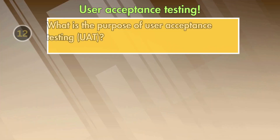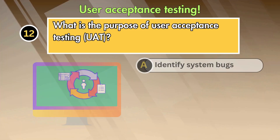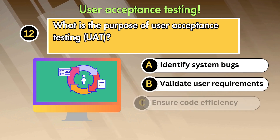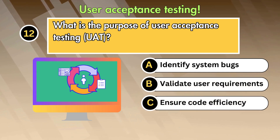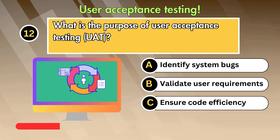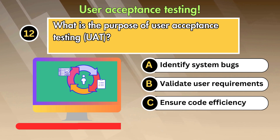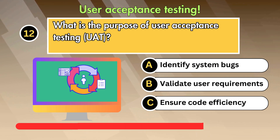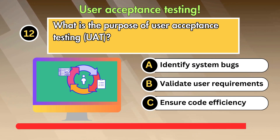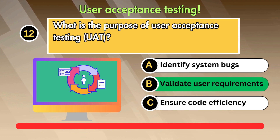Question 12: What is the purpose of user acceptance testing (UAT)? Option 1: Identify system bugs. Option 2: Validate user requirements. Option 3: Ensure code efficiency. Answer is: Validate user requirements.